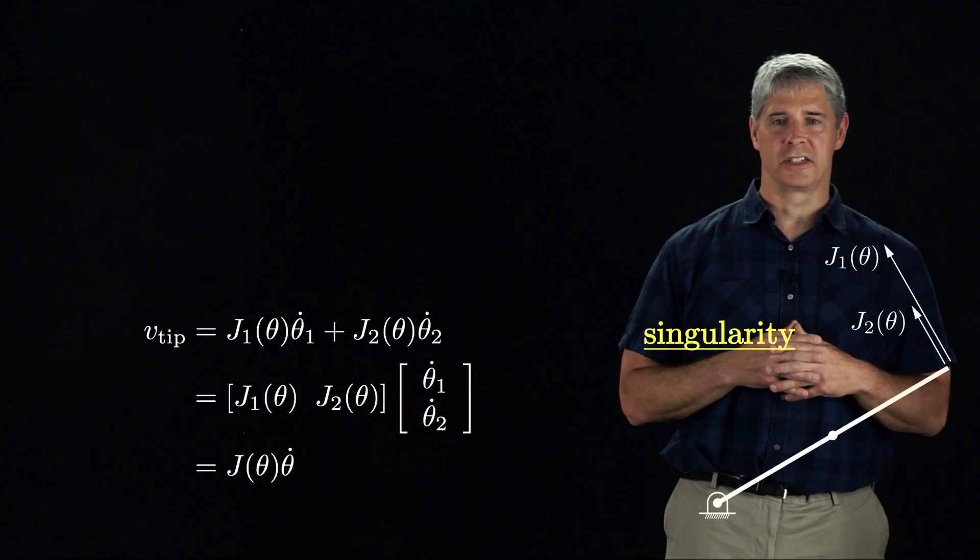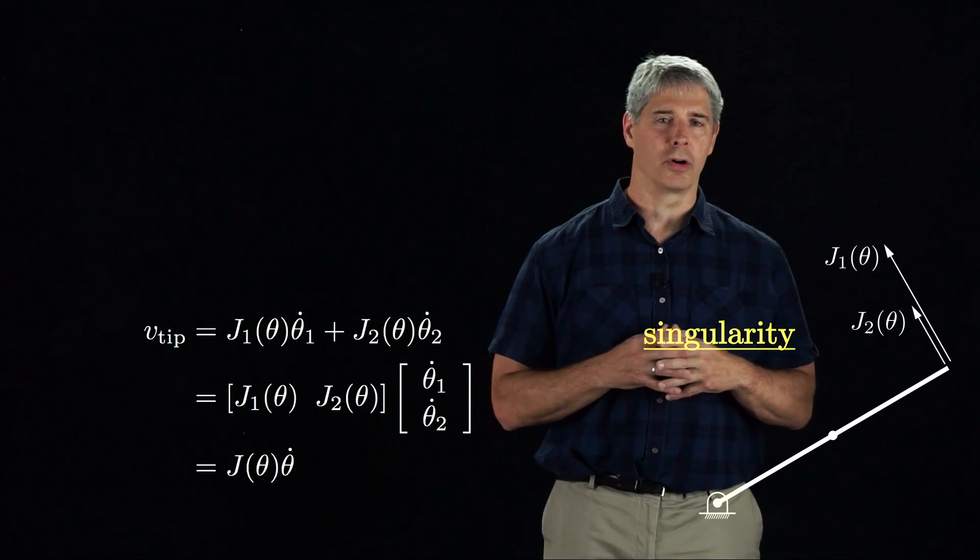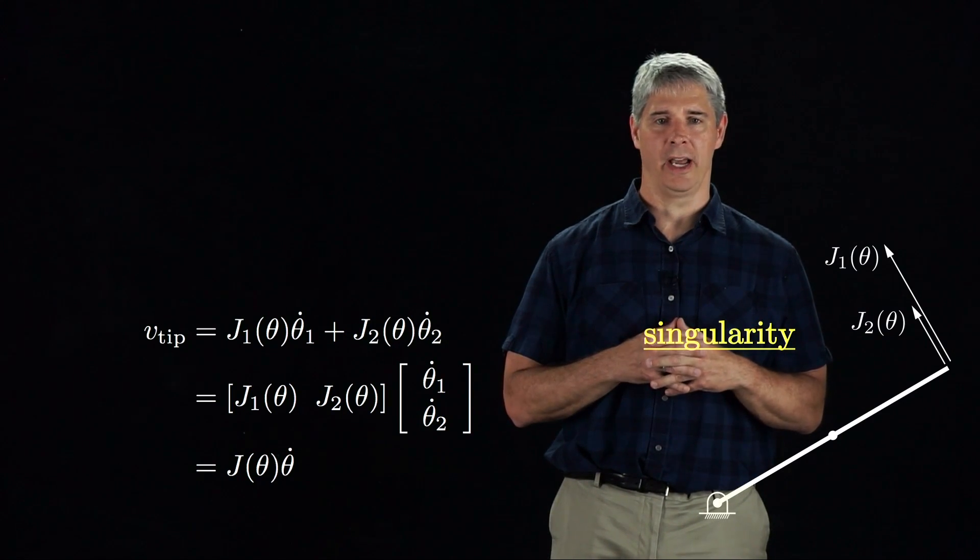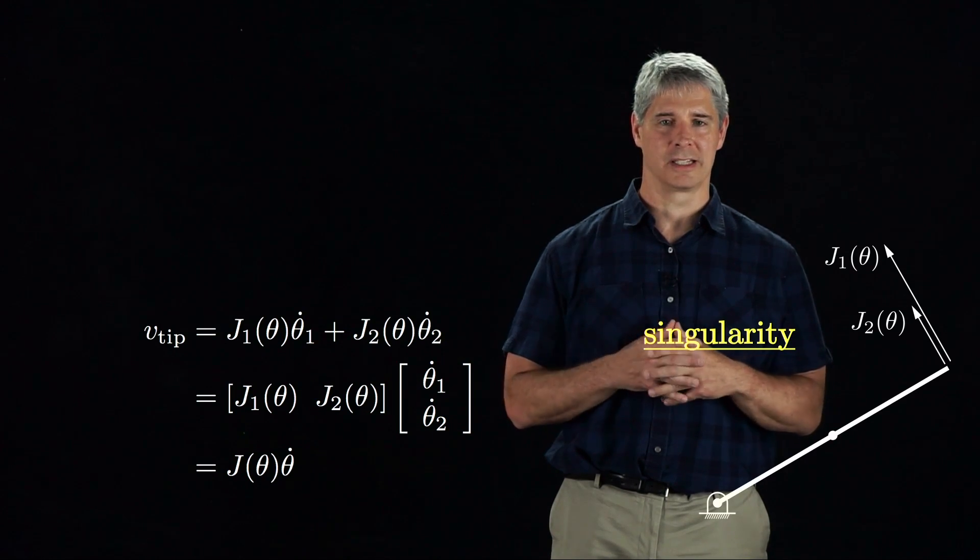If the second joint angle is 0 degrees, as shown here, or 180 degrees, J1 and J2 are aligned, and it's impossible to generate any end effector velocity except along this line.